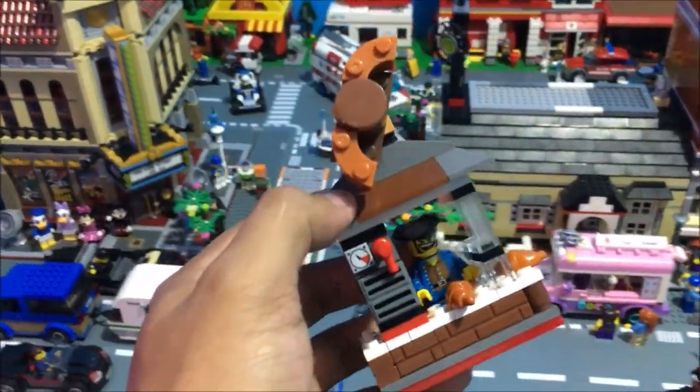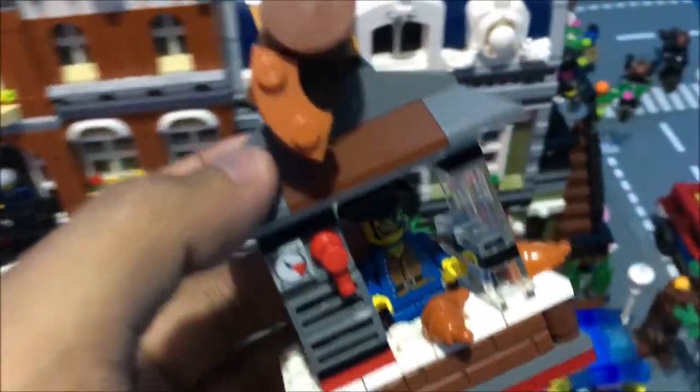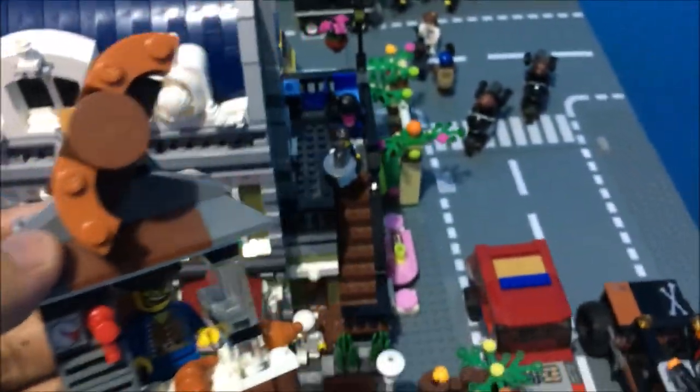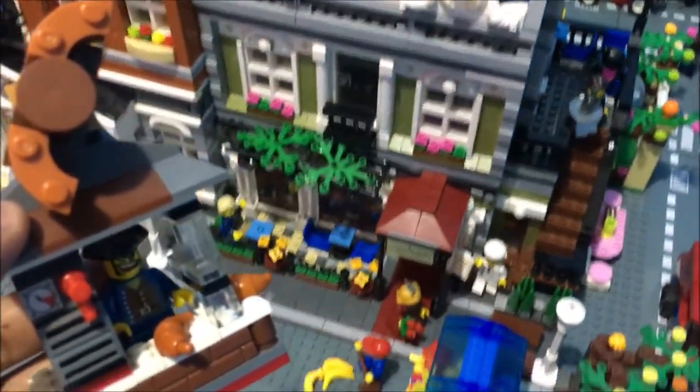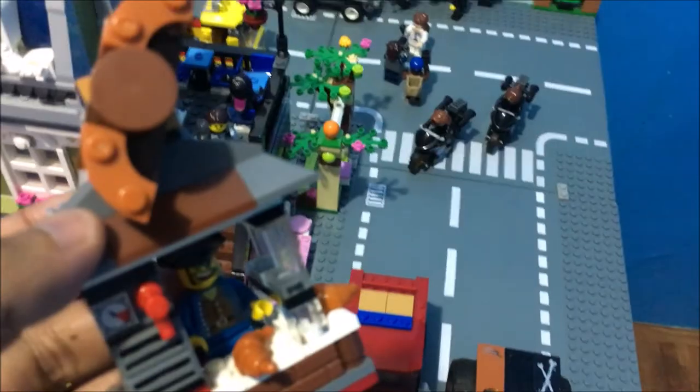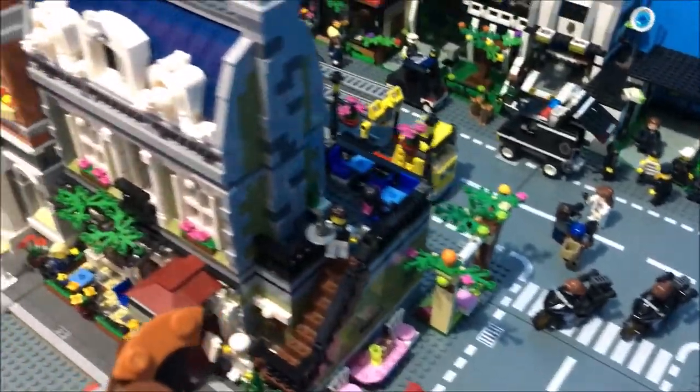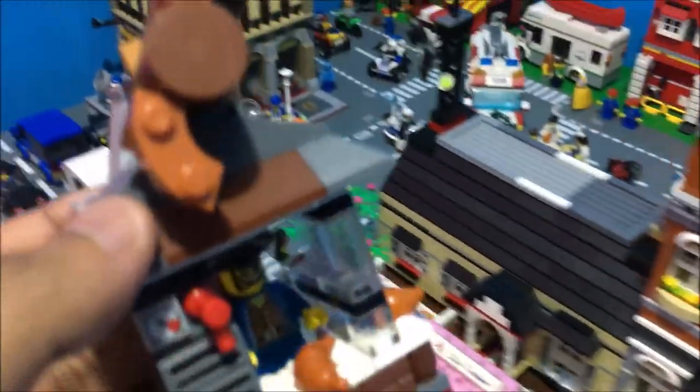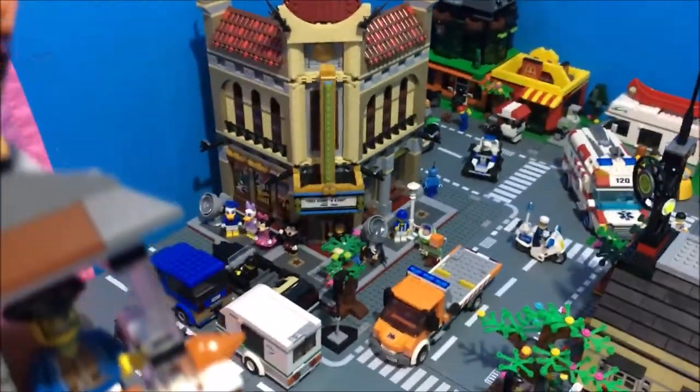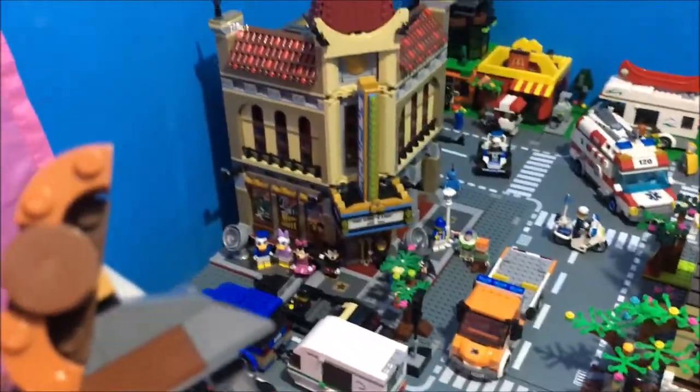So this croissant stand is a permanent build. It doesn't have wheels, so it's kind of hard to decide where to put it. I don't think it will fit here beside the corporation restaurant or behind it.